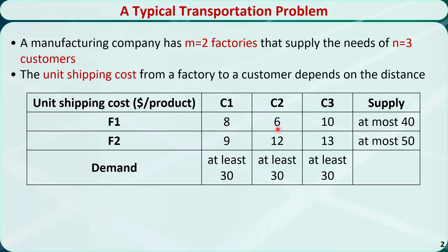Each factory has a limited capacity. Factory 1 can supply at most 40 products per day and factory 2 can supply at most 50 products per day. Each customer will need at least 30 products per day.